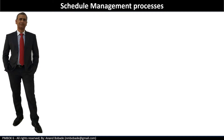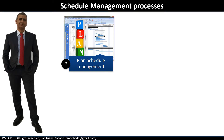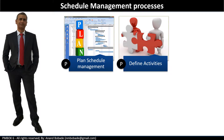Before getting into the process details, let's take a look at the list of all six processes. Plan schedule management, under planning process group, is the process of establishing policies, procedures, and documentation for the project schedule. Define activities, again under planning process group, is the process of identifying and documenting specific actions to be performed to produce the project deliverables.